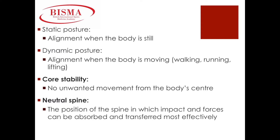A strong core makes our movement patterns more efficient overall. A neutral spine is the position of the spine whereby impact and forces are absorbed and transferred most effectively, meaning when our four natural curves are in proper alignment: the cervical, the thoracic, the lumbar, and the sacral or coccygeal curves.